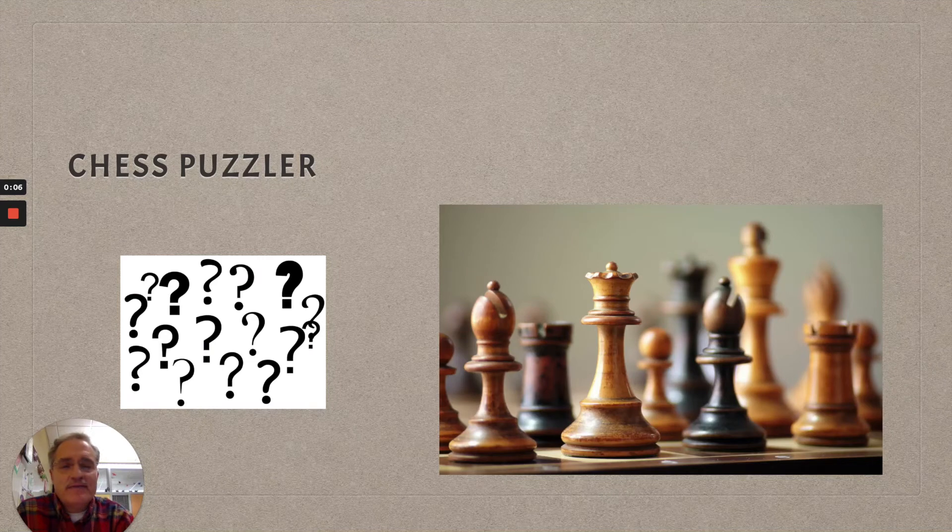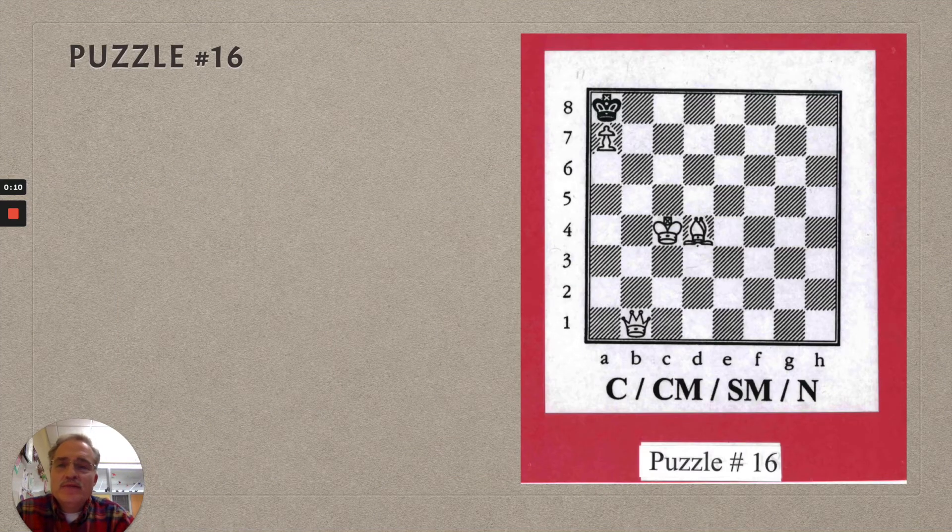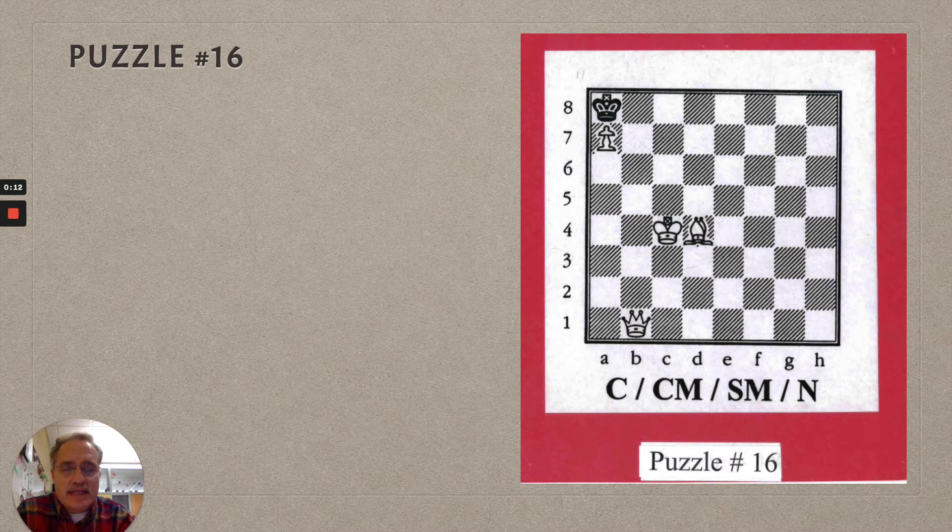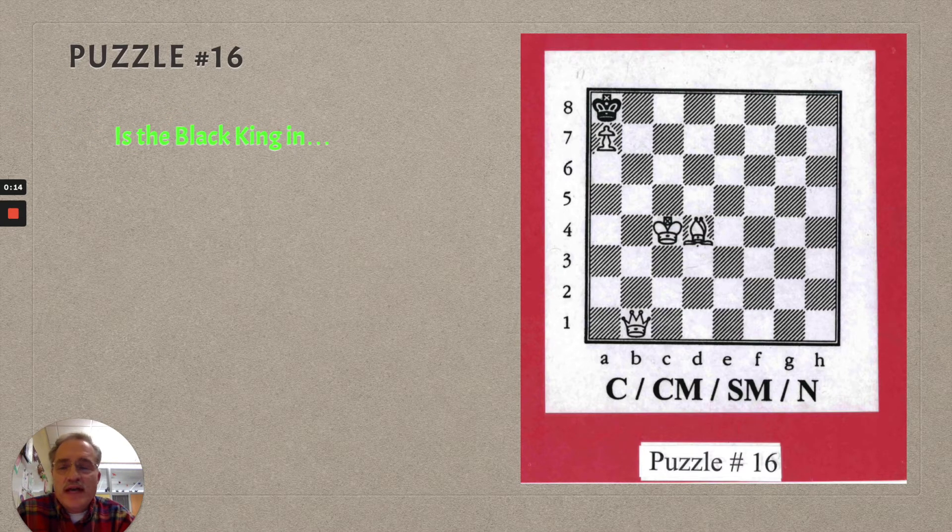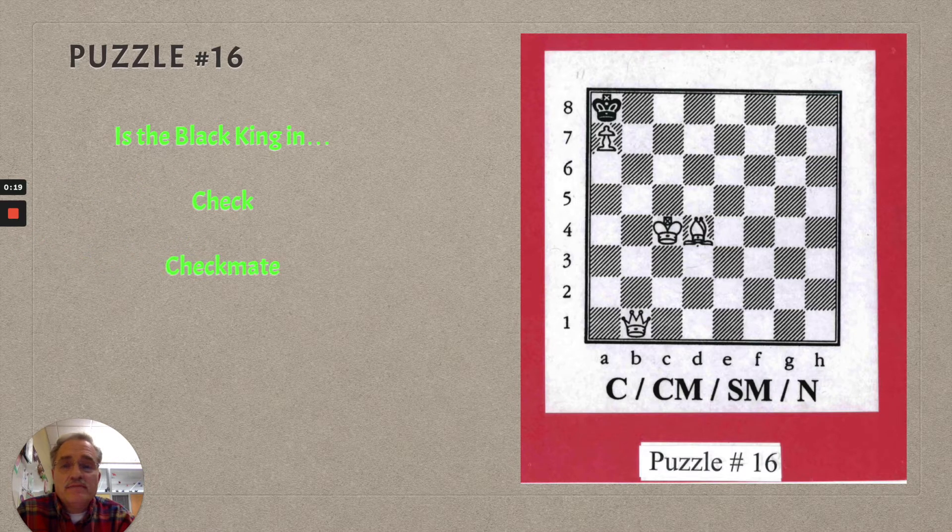Hey chess club, it's time for another puzzle with our chess puzzler. Let's take a look. This week we're looking at puzzle 16. So you have to ask yourself, is the black king in check, checkmate, stalemate, or nothing?